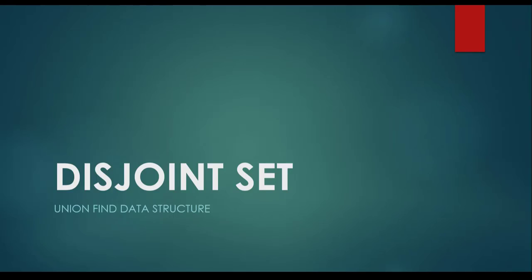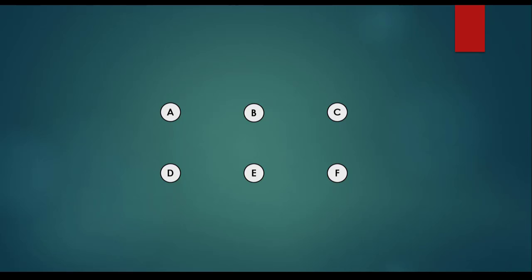In this video we are going to see an illustration of how disjoint sets work in practice. First, as discussed in the theoretical section, we assign a distinct set to each of the nodes in the graph. For example, we have nodes A, B, C, D, E and F, and all of them are in a distinct disjoint set at the beginning.